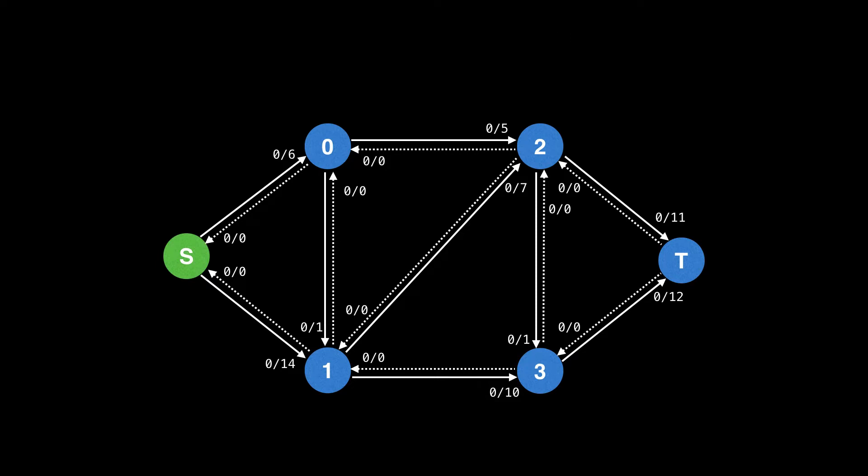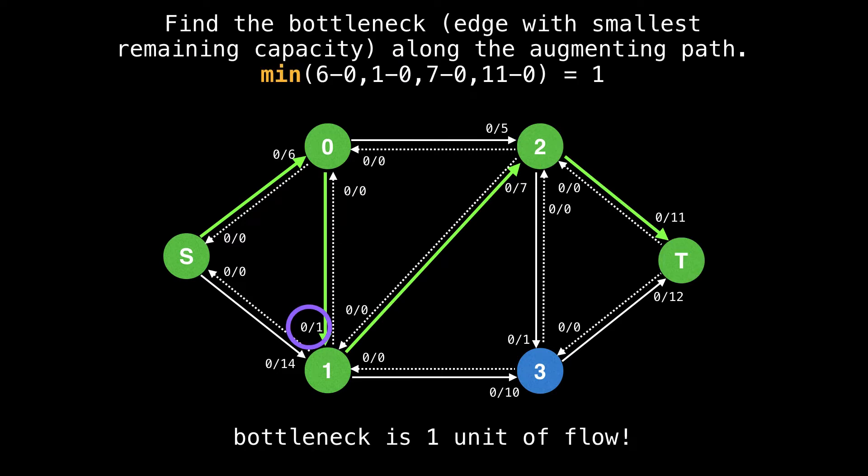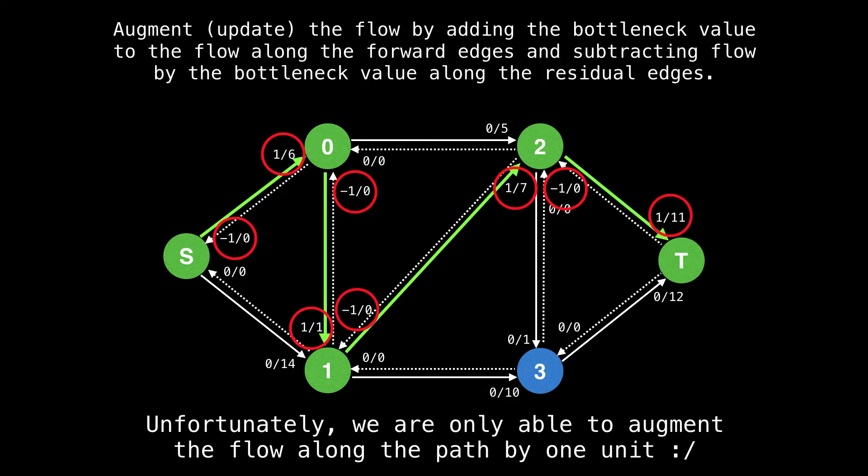And it goes something like this. We start at the source node, we take any edge with a remaining capacity greater than zero. And we just keep going until we reach the sink. And once we've reached the sink, we find the bottleneck value that is the edge with the smallest remaining capacity along our augmenting path, which in this case happens to be one. Then we augment or update the flow by adding the bottleneck value to the flow along forward edges and subtracting flow by the bottleneck value along the residual edges.